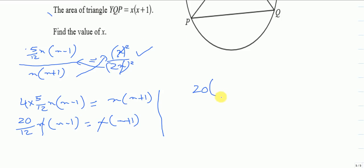20 × (x - 1) equals 12(x + 1). And then it will be 20x - 20 equals 12x + 12.